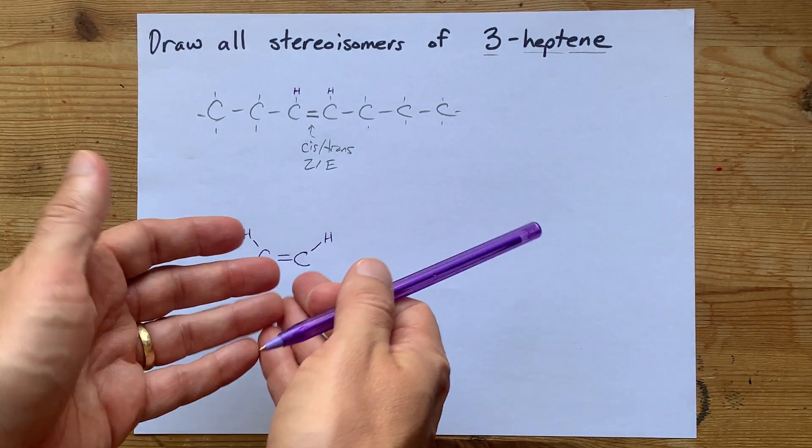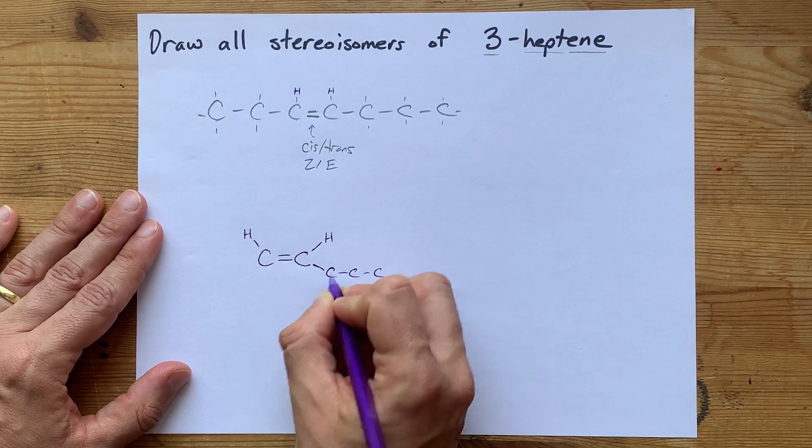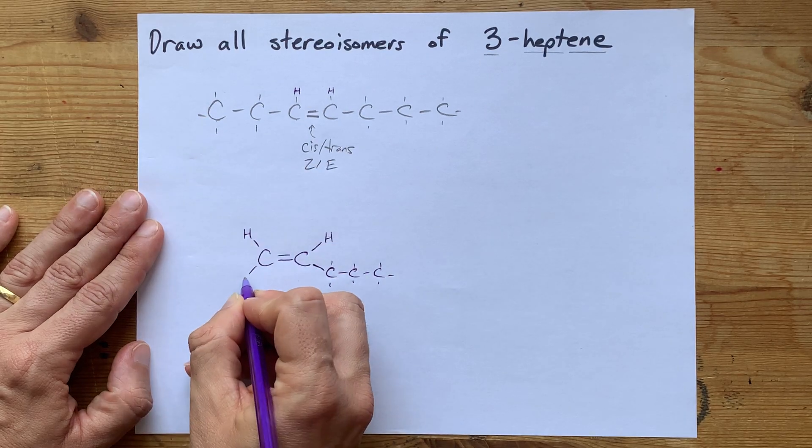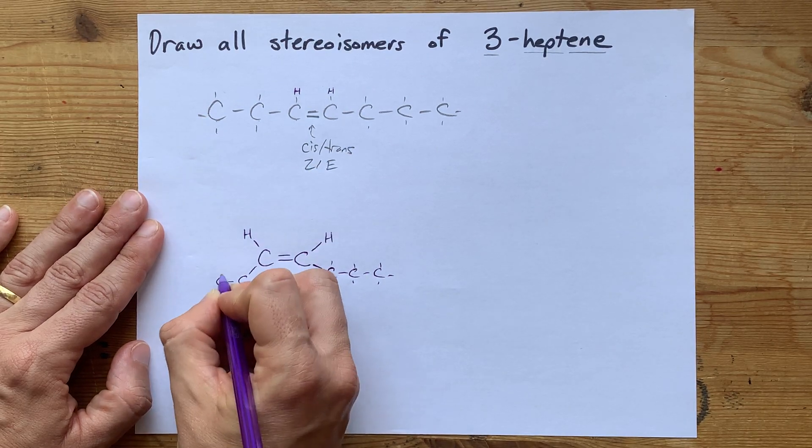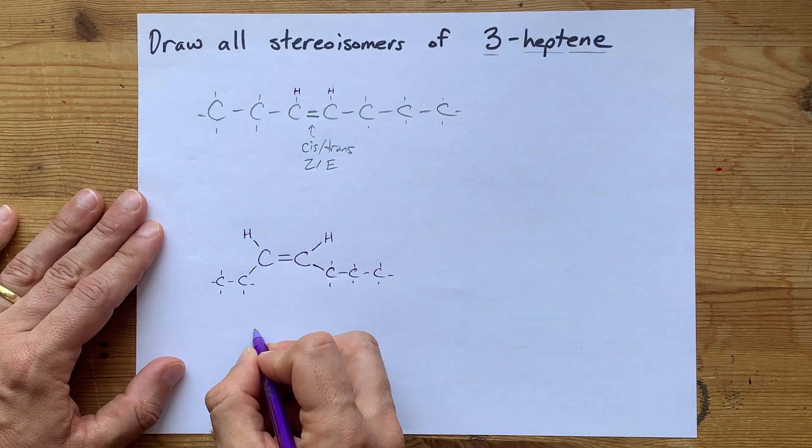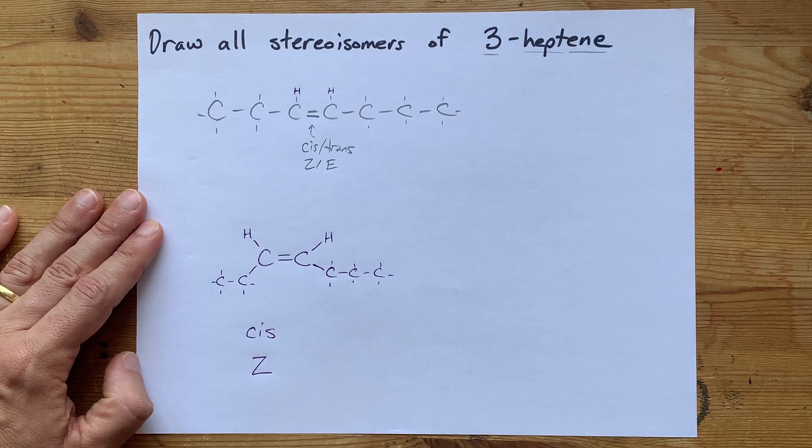And then I have the other parts of the chain here. This is going to be a CCC with its hydrogens. This is going to be a two-carbon chain with its hydrogens, and you're done. That's the cis version of it, or you might call that the Z isomer.